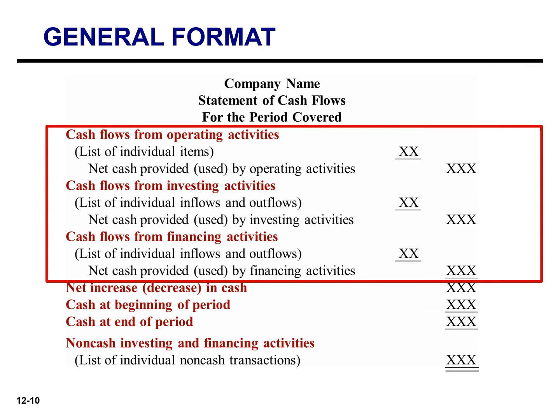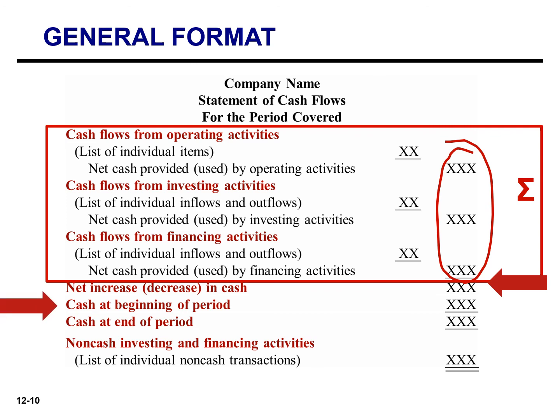The cash flows from operating activities section always appears first, followed by the investing activities section and then the financing activities section. The sum of the operating, investing, and financing activity sections equals the net increase or decrease in cash for the period. This amount is added to the beginning cash balance to arrive at the ending cash balance — the same amount that is reported on the balance sheet. Any significant non-cash financing and investing activities will be reported at the bottom of the statement of cash flows or in a separate note.